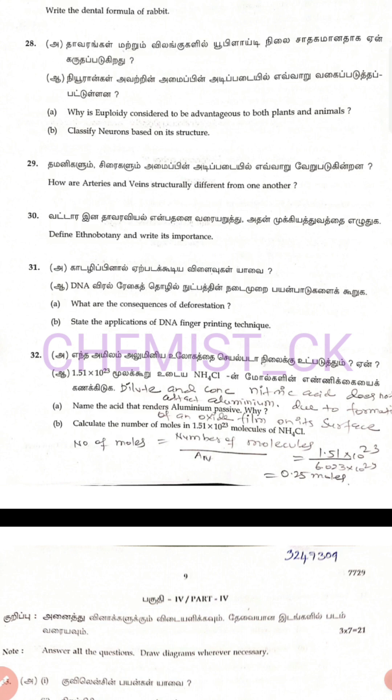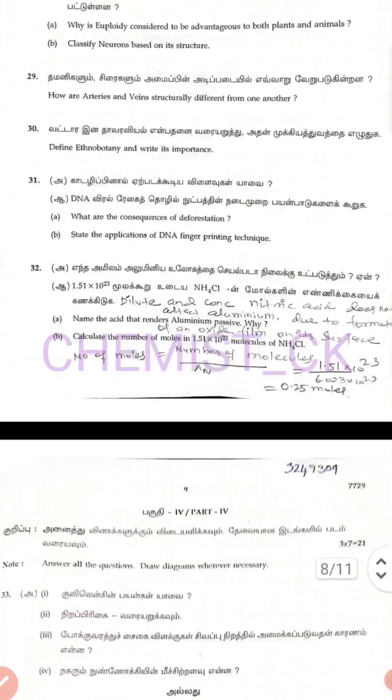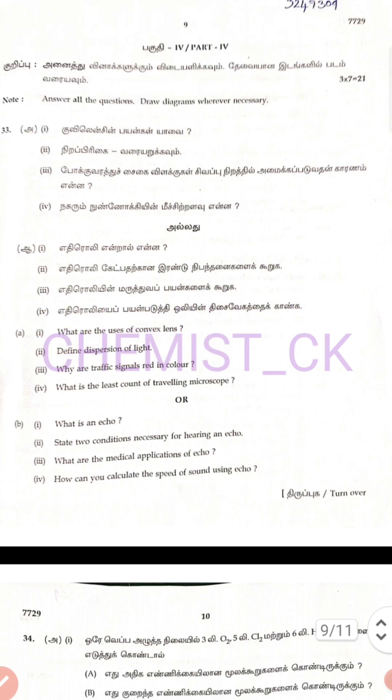The number of moles is equal to the number of molecules divided by Avogadro's number. Given 1.51 × 10²³ molecules, Avogadro's number is 6.023 × 10²³. Therefore, the answer is 0.25 moles. B is not easy.